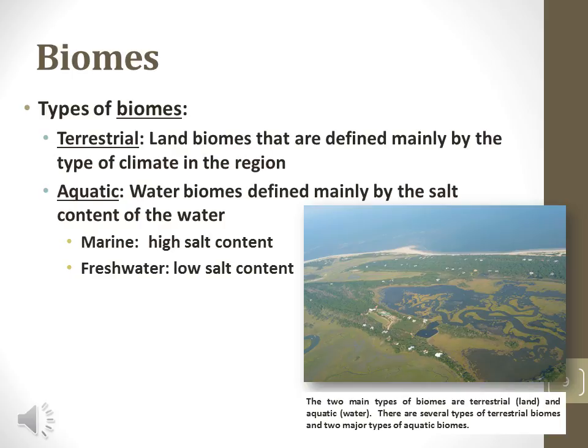Biomes are different types of ecosystems. Terrestrial biomes are on land and are characterized by climate patterns. Aquatic biomes are under water and characterized by the concentration of dissolved salt. Marine biomes are high in dissolved salt, while freshwater biomes are low in dissolved salt.